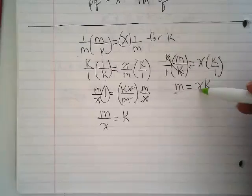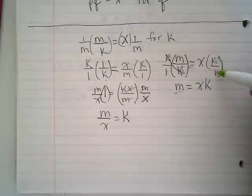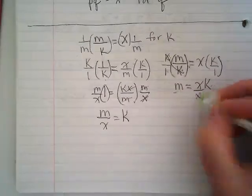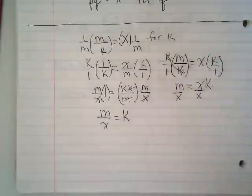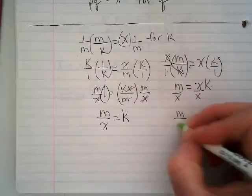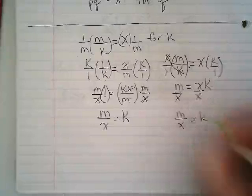And then on the right side I'm also multiplying by k over 1 and I get xk. And then I want to divide by the x. m over x is equal to k.